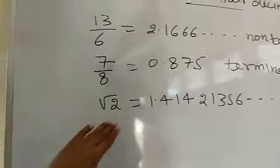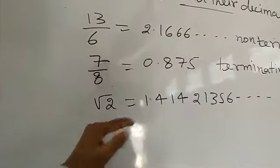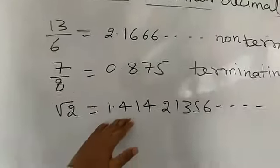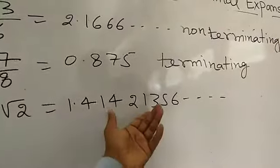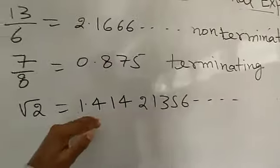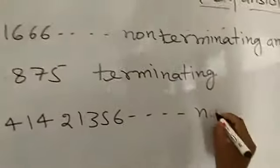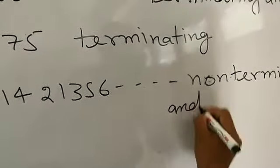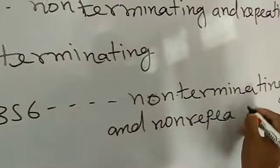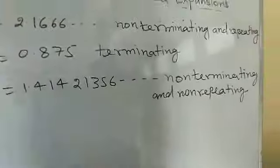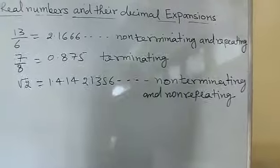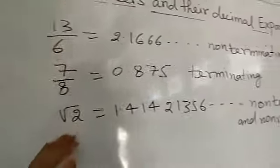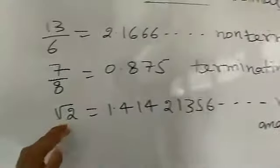Now consider root 2. If you find the value of root 2 by the long division method, you get 1.41421356 and the digits continue up to infinite. In this number, there is no digit or combination of digits that repeats. So it is called non-terminating and non-repeating, or non-recurring — and that is why root 2 is an irrational number.